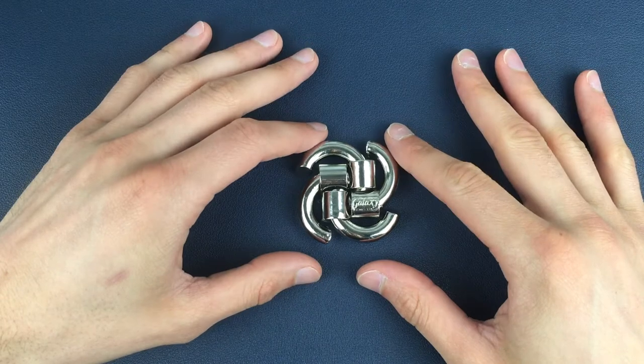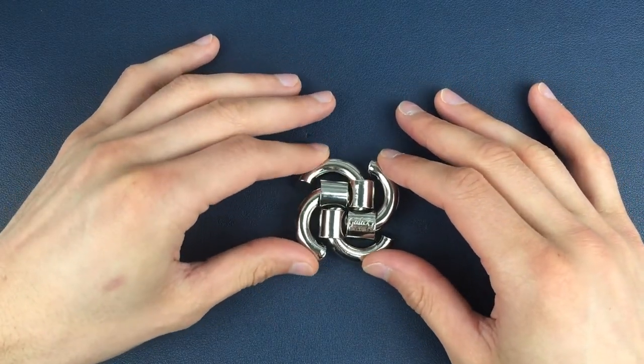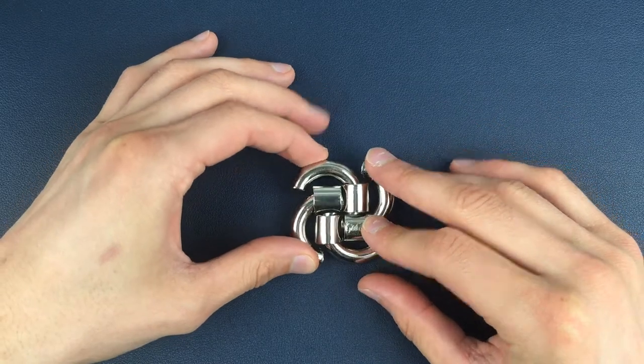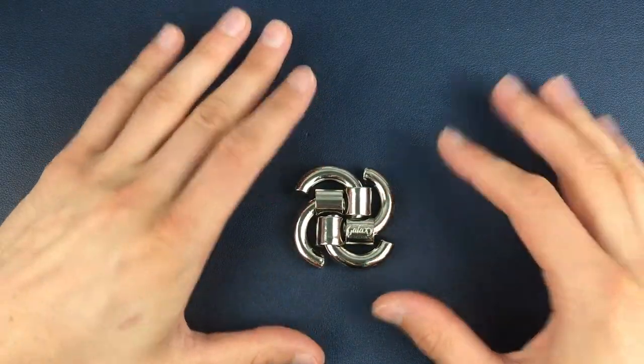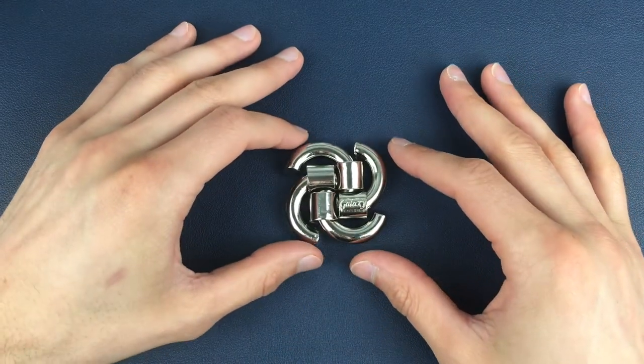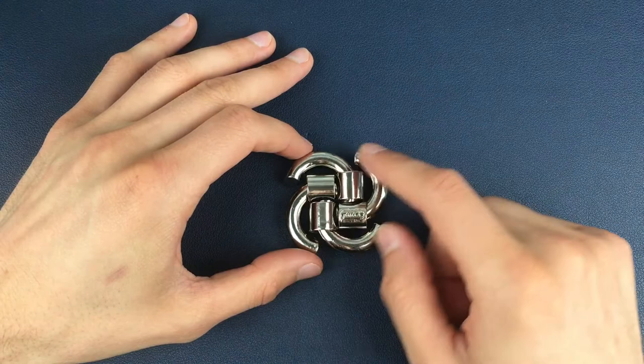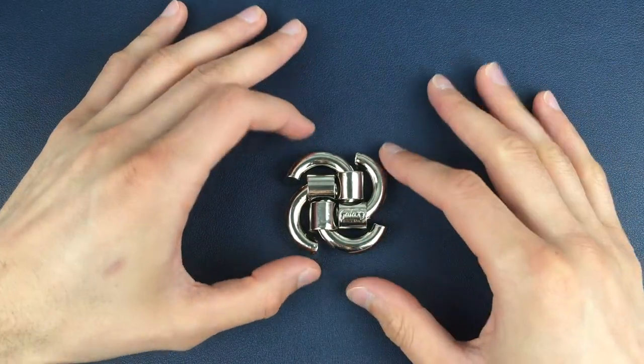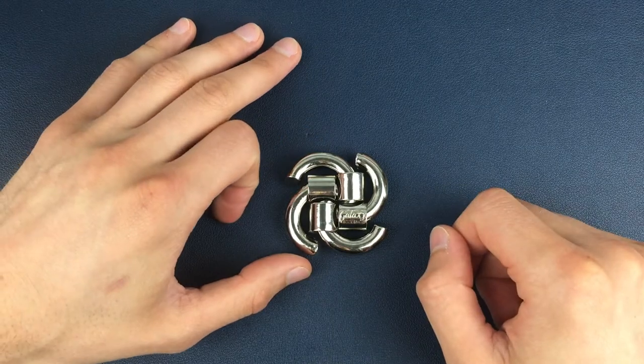Okay, so here we have a fully assembled Galaxy Puzzle. Now, separating these four pieces isn't anywhere near as difficult or as awkward as putting them back together. But we need to take them apart first. So what we need to do is position the Galaxy Puzzle in this orientation where we can see the Galaxy engraving in this bottom right hand corner.